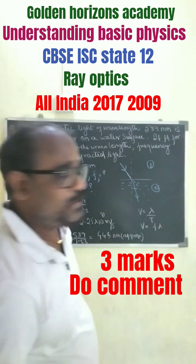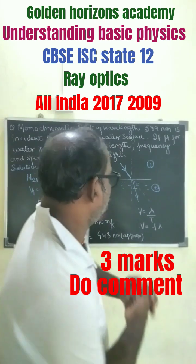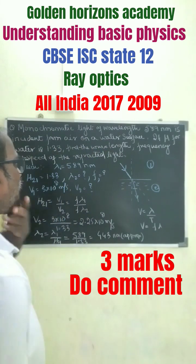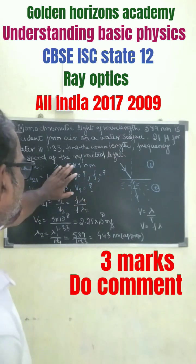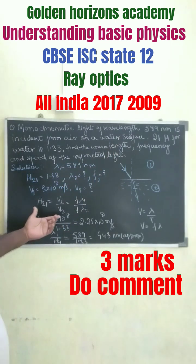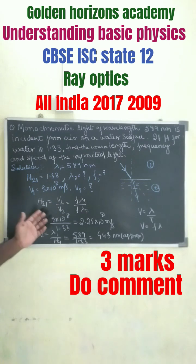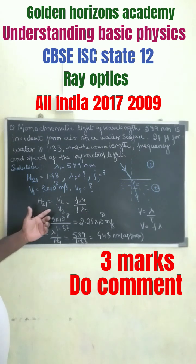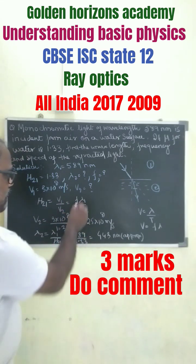The frequency doesn't change here, so we don't need to find that. What we actually have to find out is the wavelength and the speed. We already know the relation: the refractive index mu(2,1) equals v1 by v2, which equals f·lambda1 by f·lambda2.